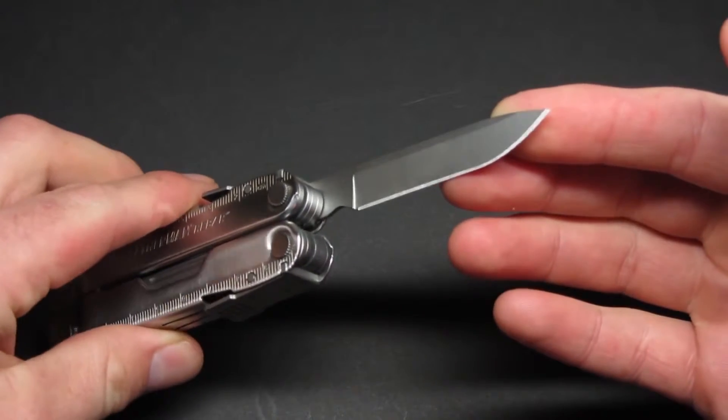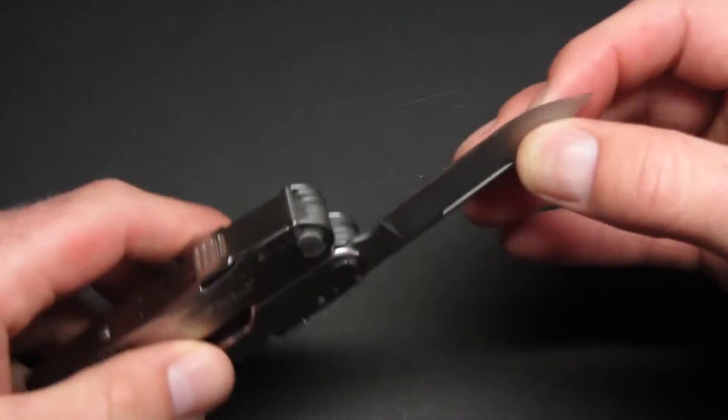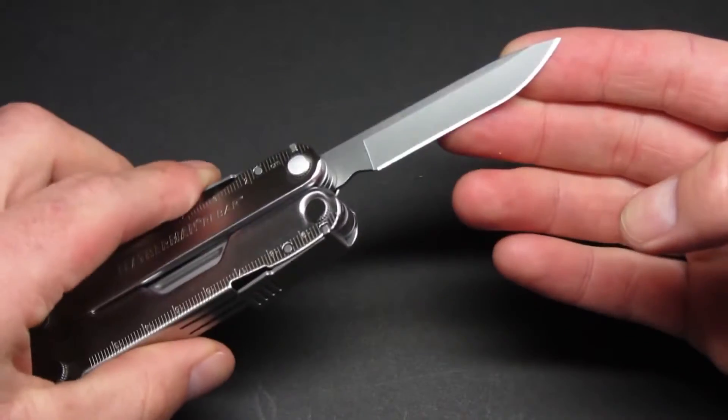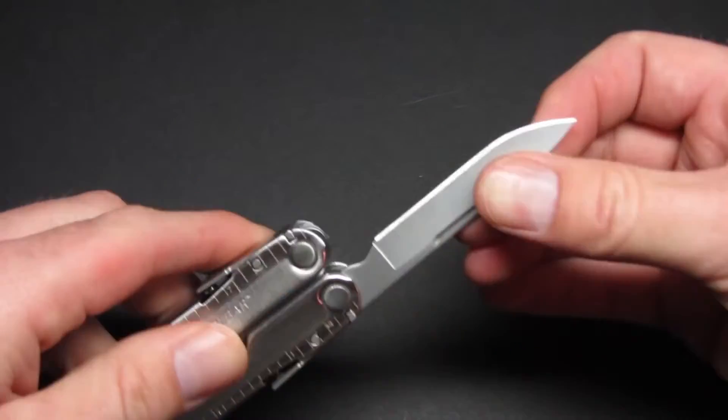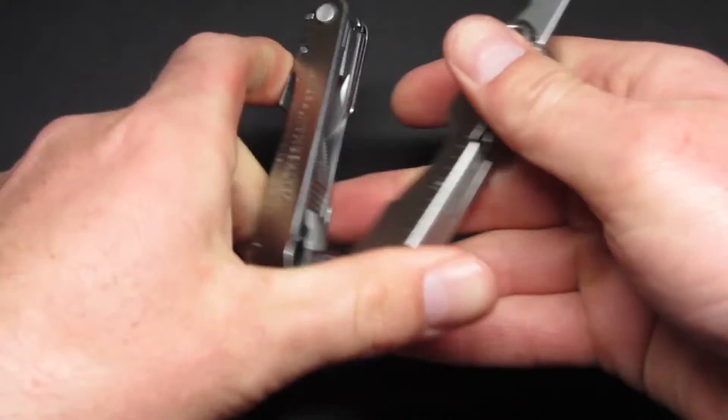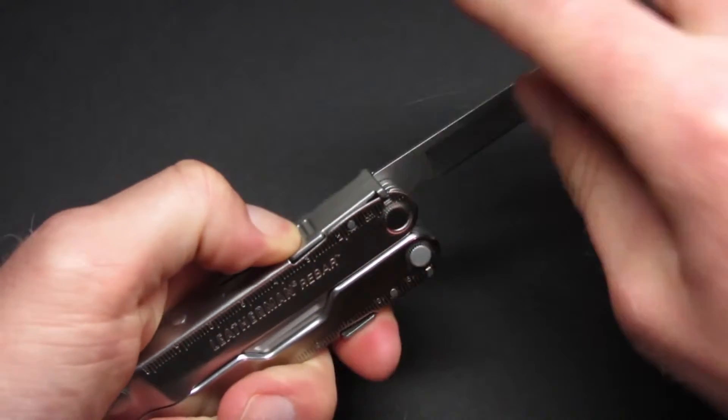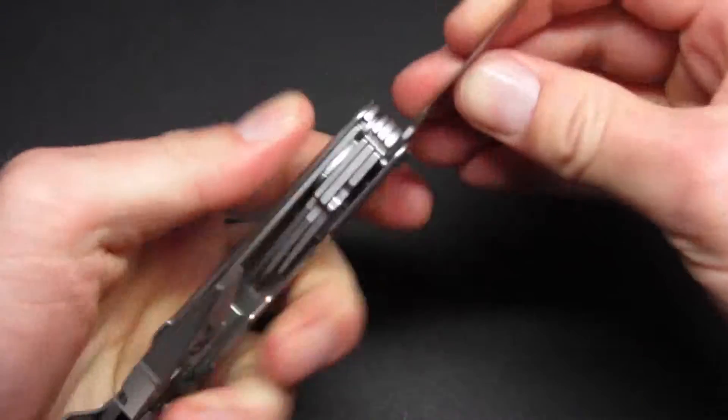You can see the edge there. It is ground on both sides, has a bevel on the edge, so it's not a chisel grind. Obviously it is locking. The way you disengage the lock, open or close, is you press down on this piece right here and it disengages the lock on all the tools.